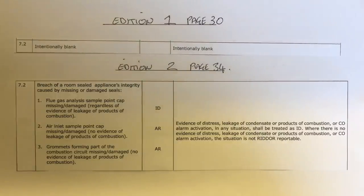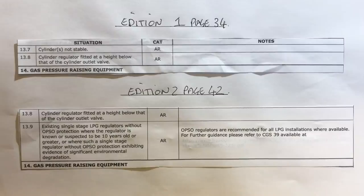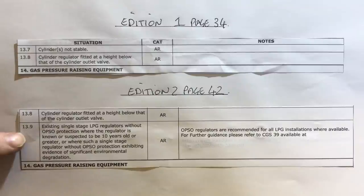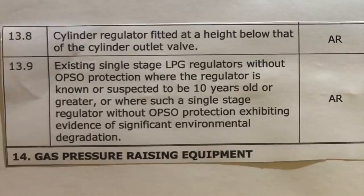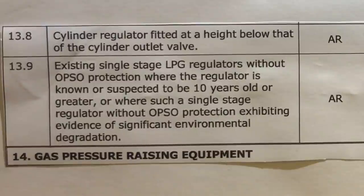The last change is table reference 13.9, which did not exist in edition one and has been added to edition two for LPG. This situation provides guidance where existing single-stage LPG regulators are without over-pressure shut-off protection, where the regulator is known or suspected to be 10 years old or greater, or where such a single-stage regulator without over-pressure shut-off protection exhibits evidence of significant environmental degradation.